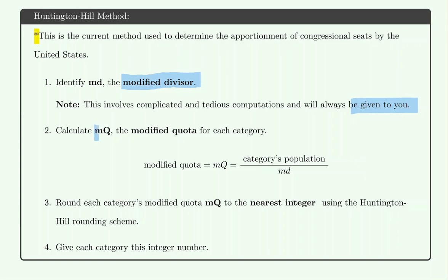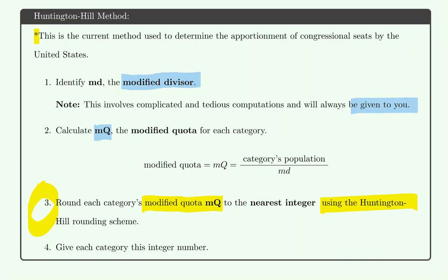You would calculate the modified quota by taking the category's population and dividing it by the modified divisor. For each category, you find the modified quota by dividing these two things in your calculator. This is where it differs from the Jefferson method — in step three, we have to round each category's modified quota using the Huntington Hill rounding scheme.